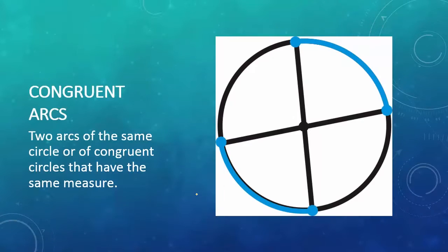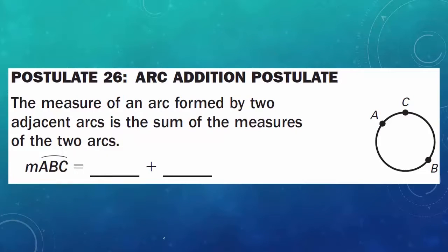Congruent arcs: two arcs of the same circle or of congruent circles that have the same measure. Postulate 26, Arc Addition Postulate: the measure of an arc formed by two adjacent arcs is the sum of the measures of the two arcs.